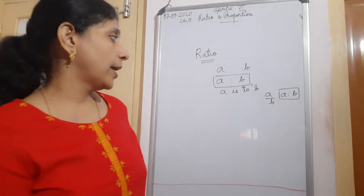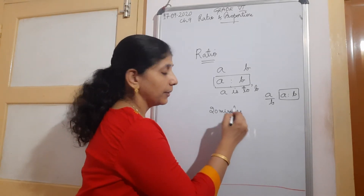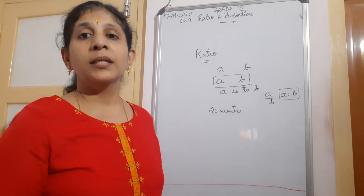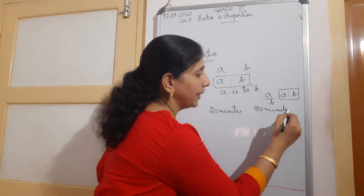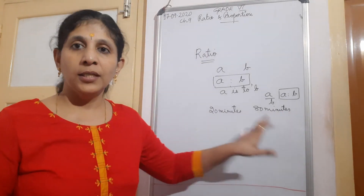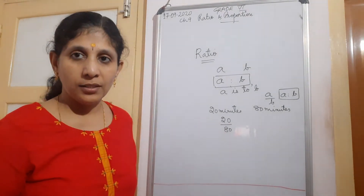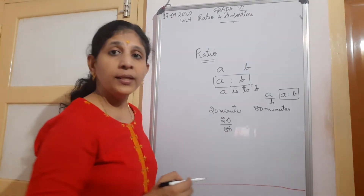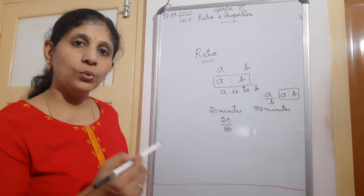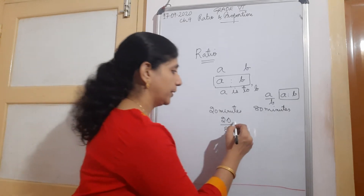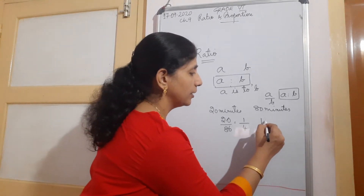Now if I tell you I have studied for 20 minutes and my brother has studied 80 minutes in a day. How will I compare? Units are the same, both are in minutes. So I will compare it - it is 20 upon 80. You can cancel both the zeros, then take the common factor. So 2 by 8, the common factor is 2, so it is 1 by 4. How will you express 1 by 4 in ratio? It is 1 is to 4.